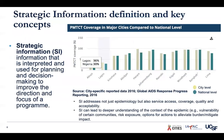Strategic information is a higher-level concept. It includes surveillance and monitoring and evaluation — the kinds of information that are interpreted and used for planning and decision-making to improve the direction and focus of a program. Here we can look at city-specific reported data from the Global AIDS Response Progress Report for 2016, with city and national level data looking at PMTCT coverage, for instance, in Nairobi versus Kenya as a whole. SI addresses not just epidemiology, but also service access, coverage, quality, and acceptability.